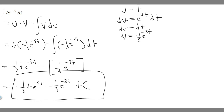So the final answer is minus 1 over 3 times t times e to the minus 3t, minus 1 over 9 times e to the minus 3t, plus C. Hopefully you found this video useful.